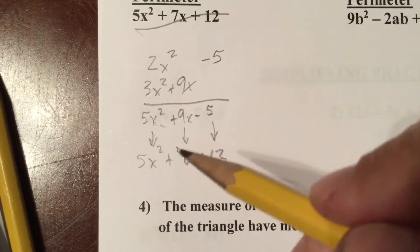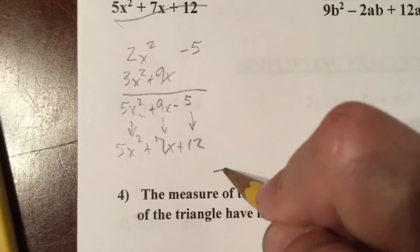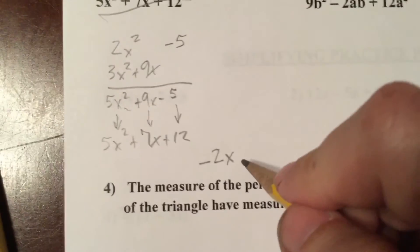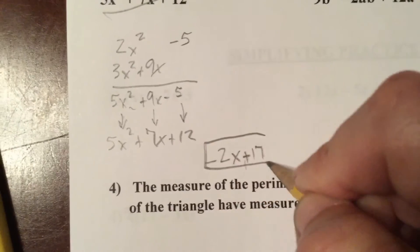So the 5x squared doesn't change. From 9x to 7x, my third side should contain a negative 2x. And to go from negative 5 to 12, I should add 17. So that is how to get my third side.